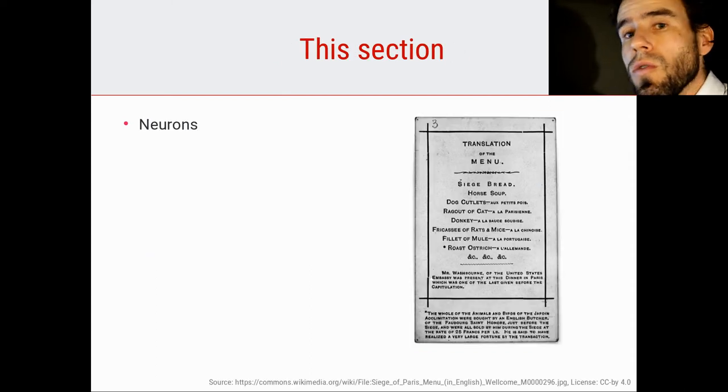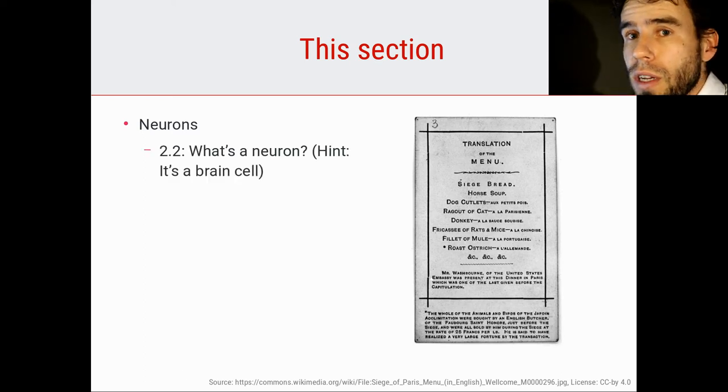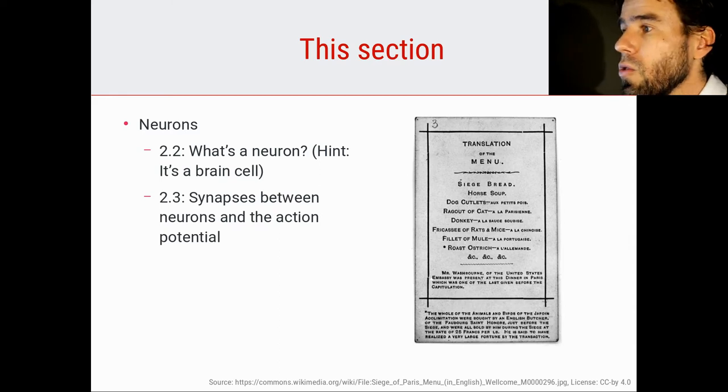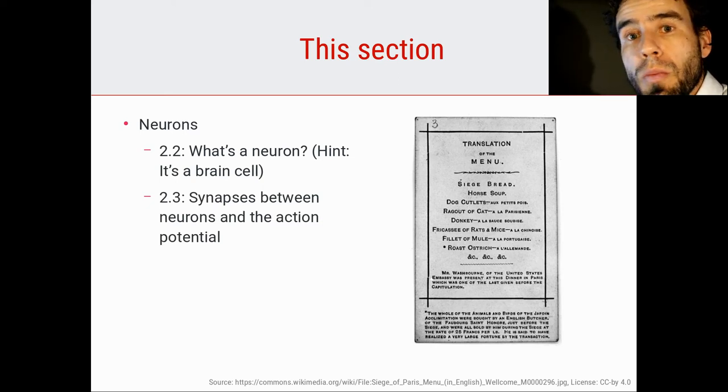Now, what are we going to talk about in this section, this lecture about neurons and brain anatomy? In the next video, video 2.2, we're going to talk about what a neuron is, which you probably know. A neuron is a brain cell. And about the membrane potential, which is an important concept when talking about neurons. Then in video 2.3, we're going to talk about synapses, which are connections between neurons, and action potentials. And an action potential is basically a spike of activity of a single neuron. It's what happens when a neuron becomes active.